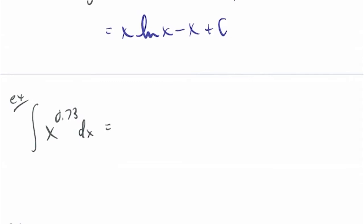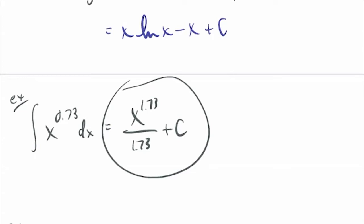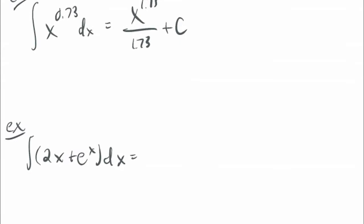Some examples. This one probably should not be very difficult, but a lot of people will have some trouble because they see the decimal exponent and think, oh man, what do I do? We just follow the power rule for antiderivatives: add 1 to the exponent and divide by the new exponent. So the antiderivative of x^0.73 is x^1.73 / 1.73 + C. And if you apply the power rule for derivatives to this, you will get x^0.73.